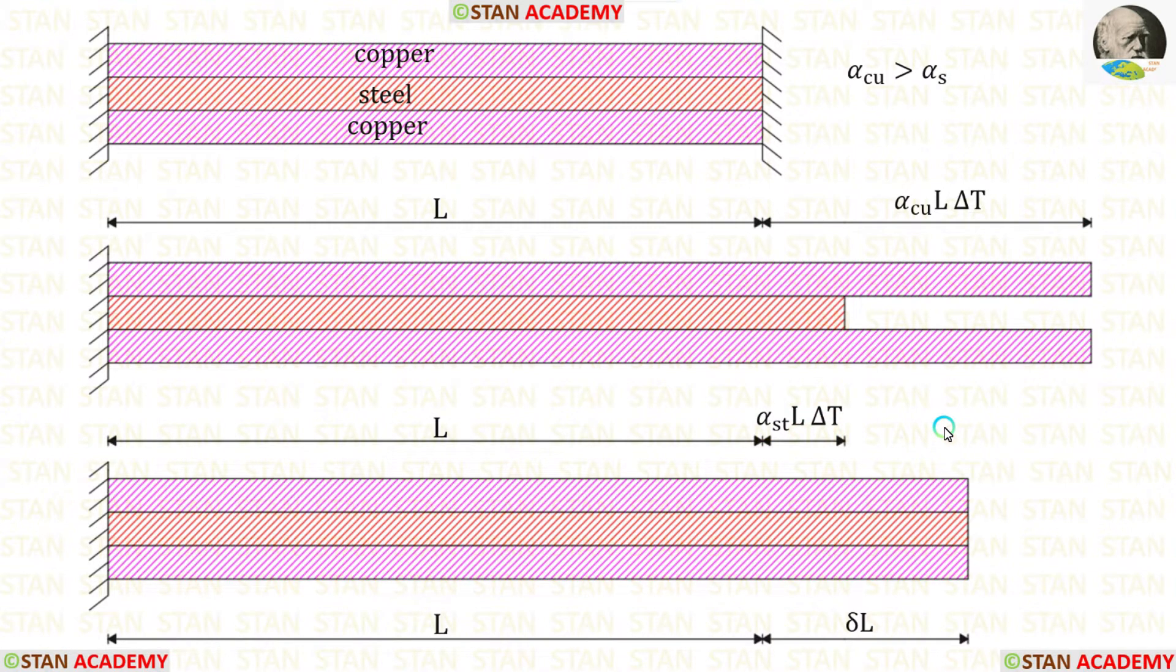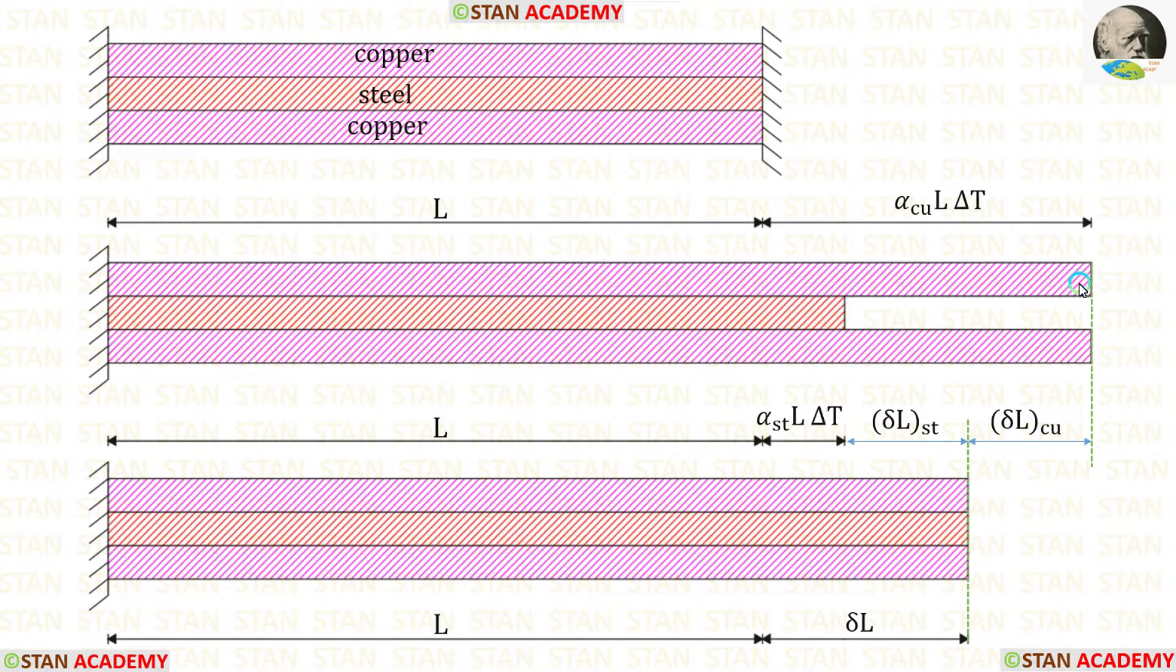But in reality, it won't happen like this. The copper bars and steel bars will take an intermediate position. For the copper bars to take this intermediate position, they have to compress by delta L Cu. So in the copper bars, there will be compressive stress. For the steel bar to take this intermediate position, it has to expand by delta L St. So in the steel bar, there will be tensile stress.